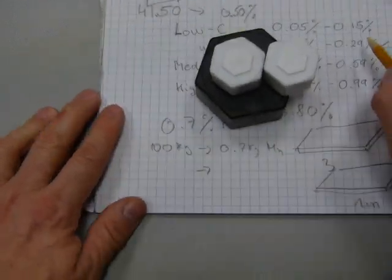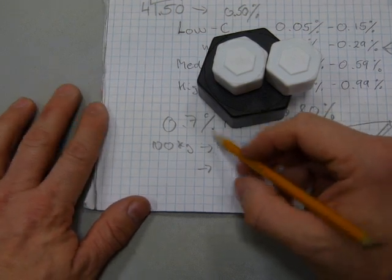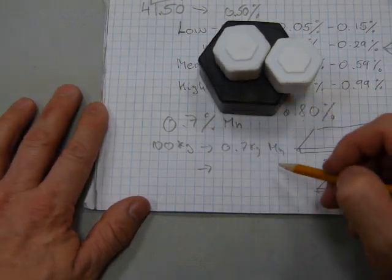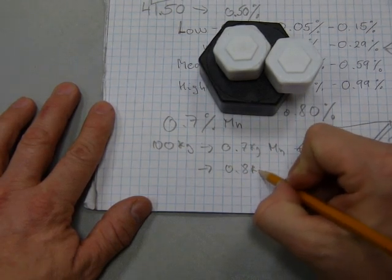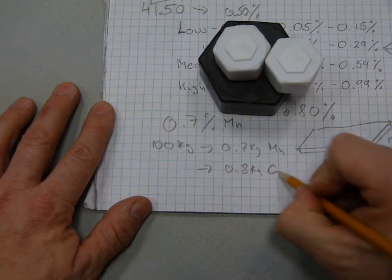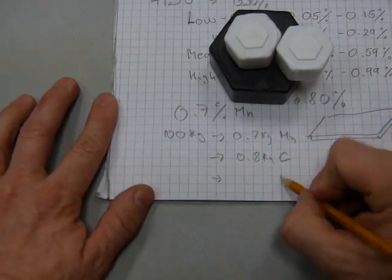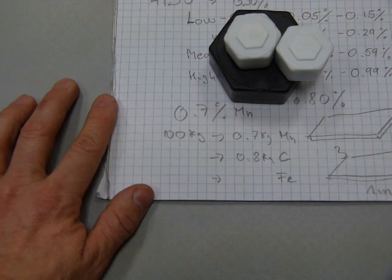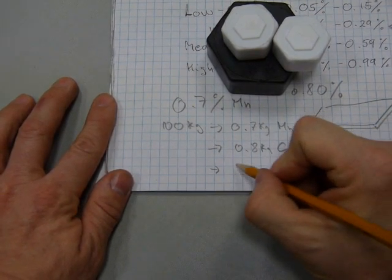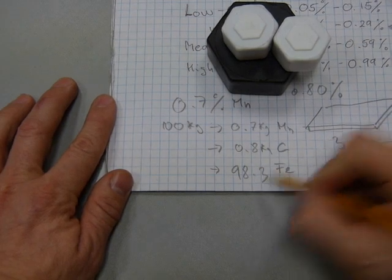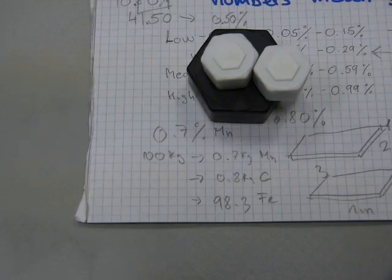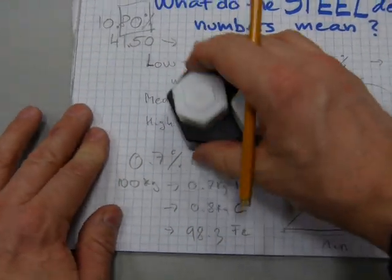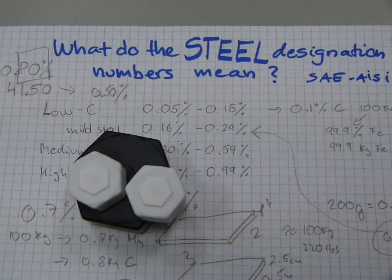If it's 1080 steel, it's gonna have 0.8 percent carbon in it, and 0.8 percent carbon is gonna be 0.8 kilogram of carbon. And the rest of it is gonna be iron, so approximately, I don't have a calculator, I don't know, 98.3 something like that. So that's how these percentages work and that's what these steel designation numbers mean.